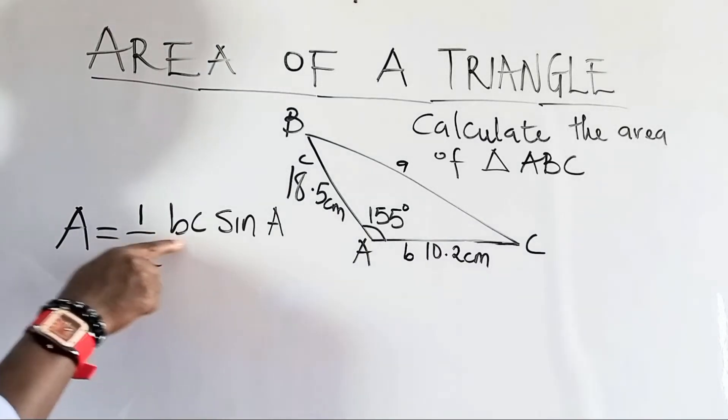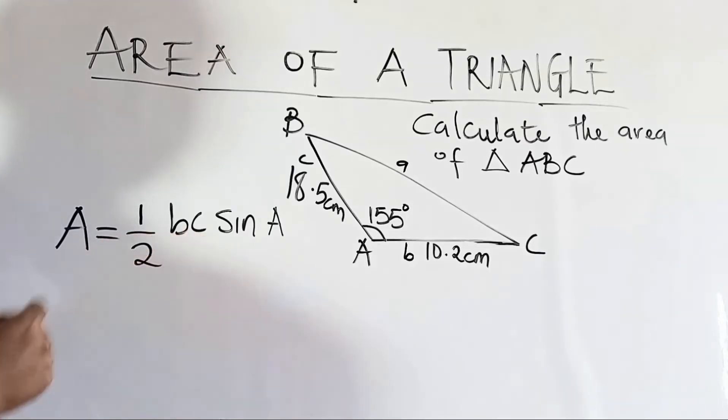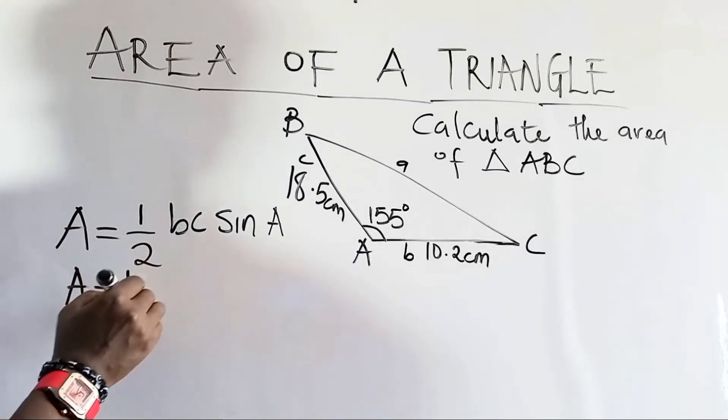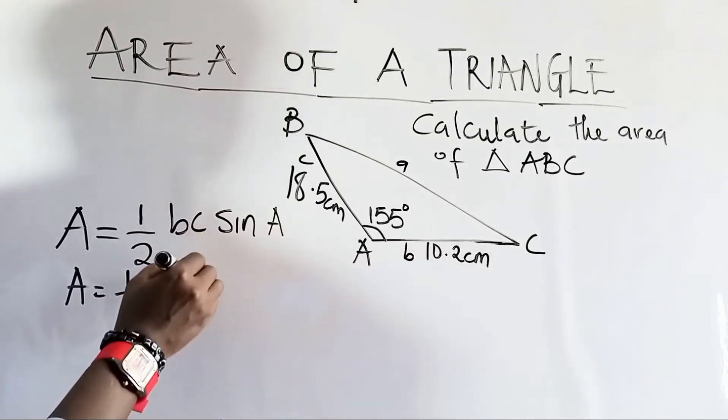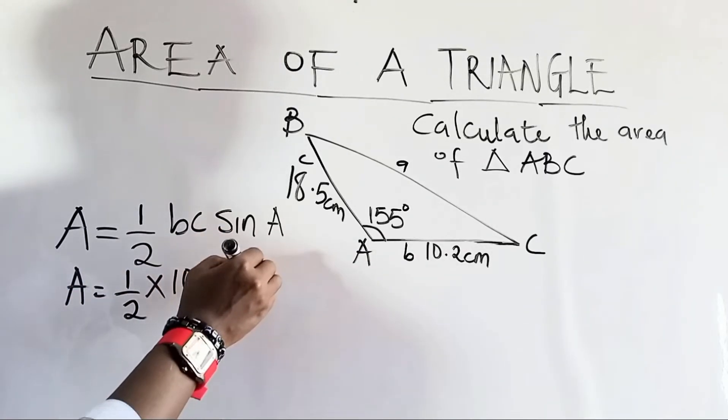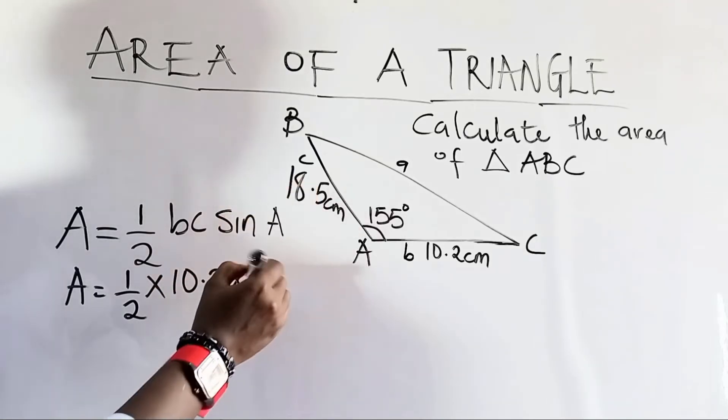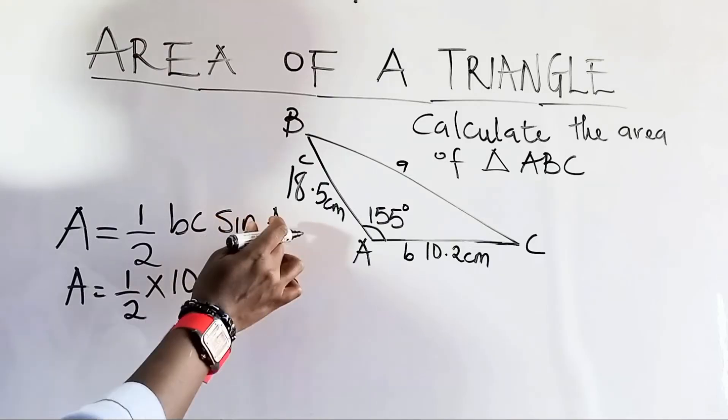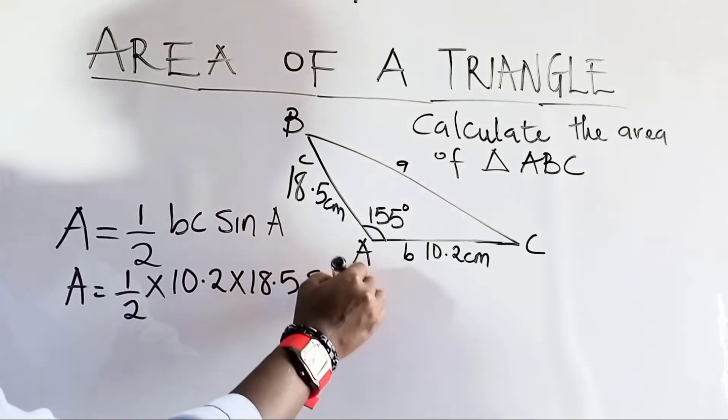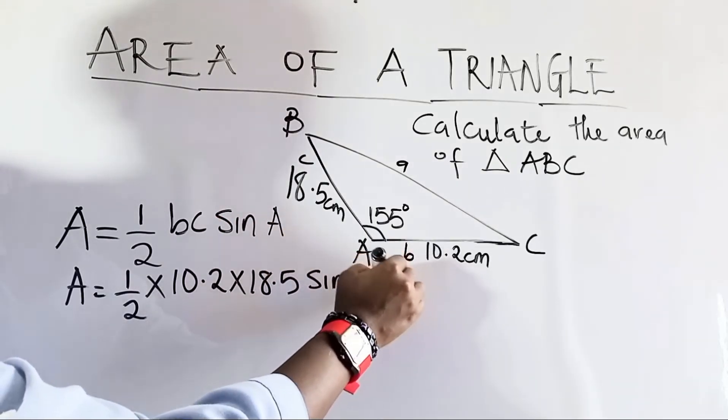Now we know our side B, we know our side C and we know the given angle. So let us input the values. So our area equals 1 over 2 times, side B is 10.2, side C is 18.5 and we have sine 155 degrees.